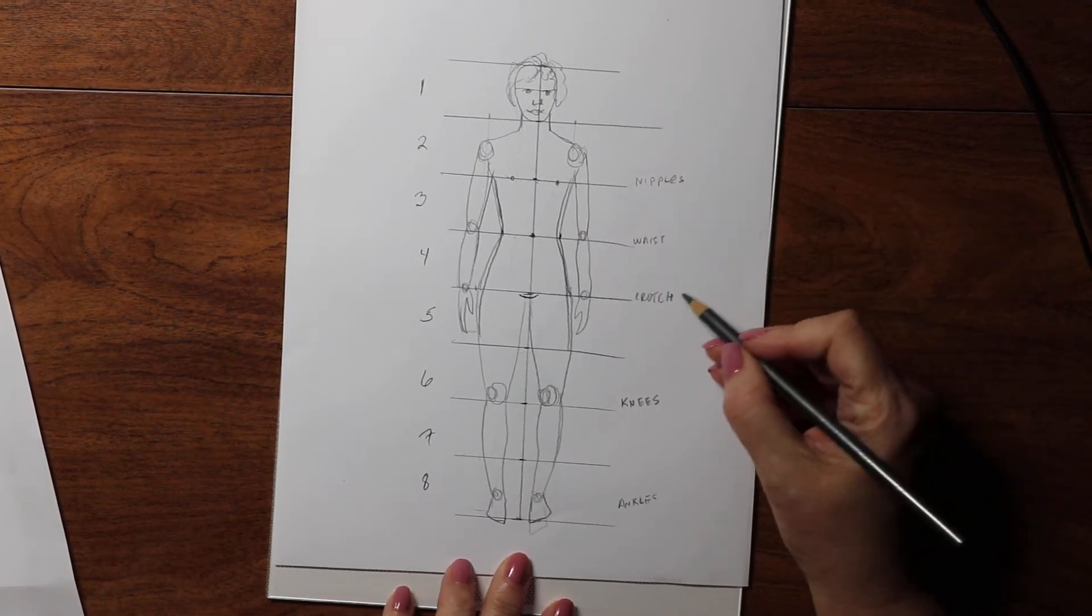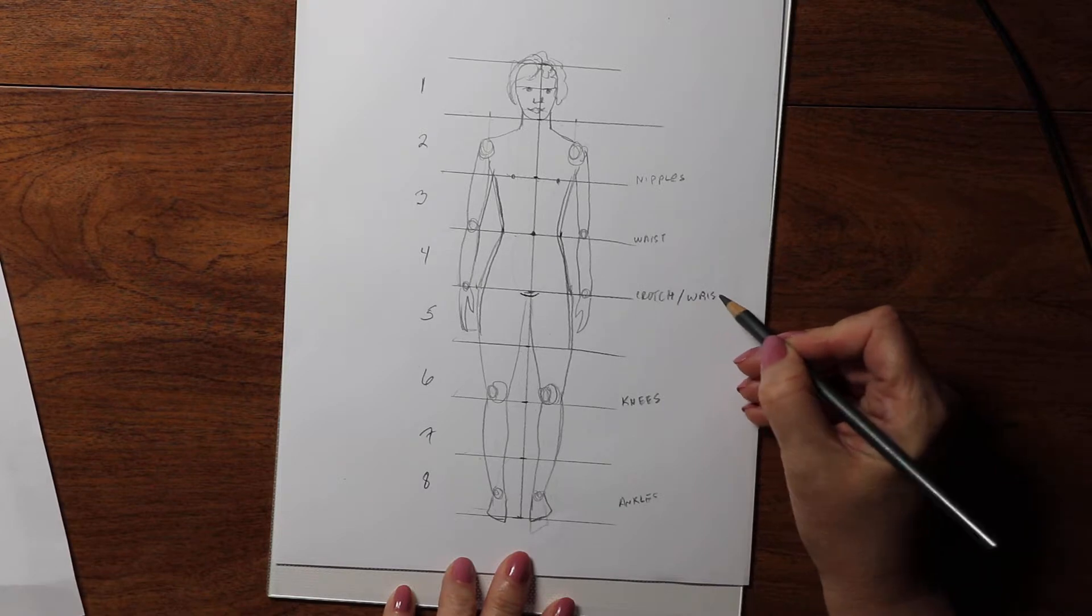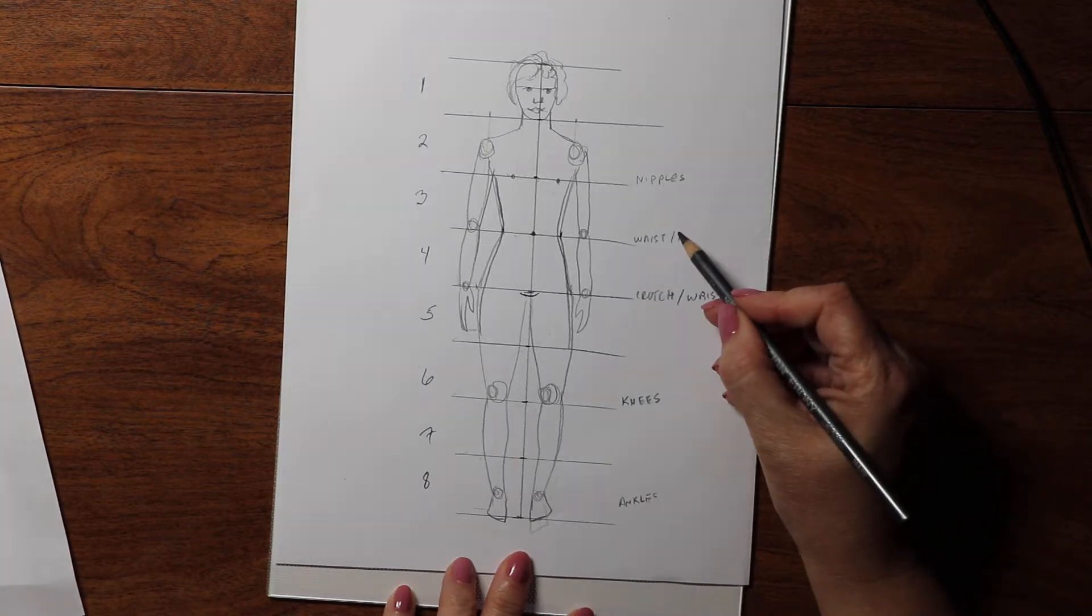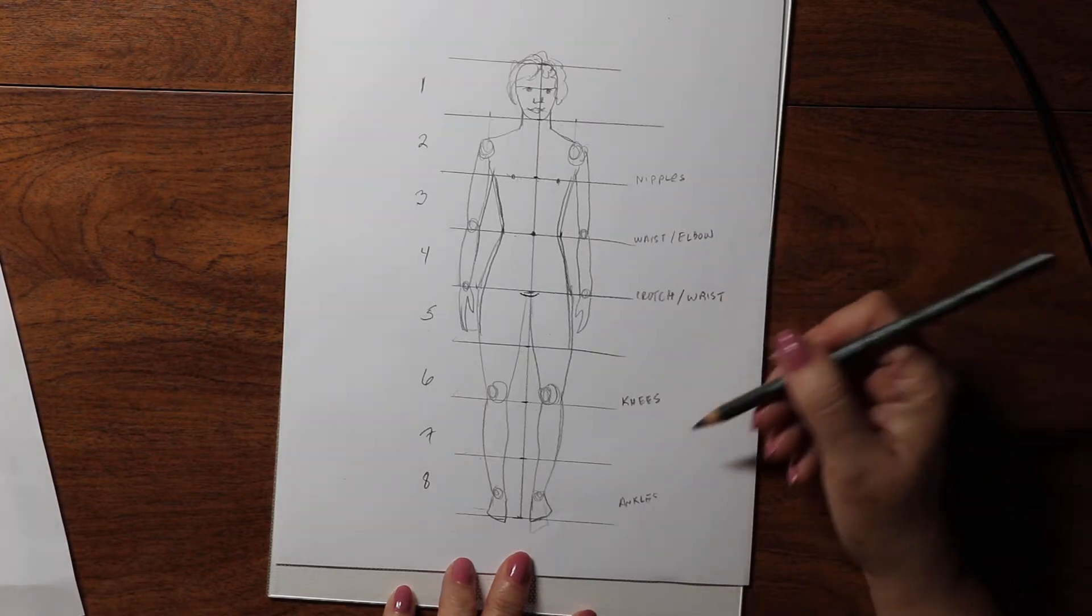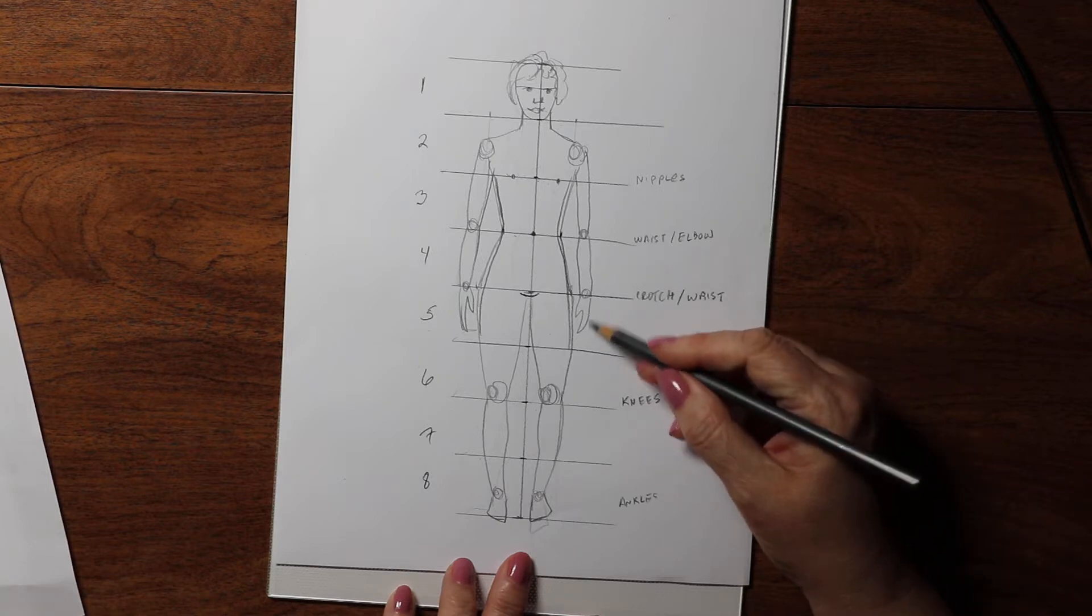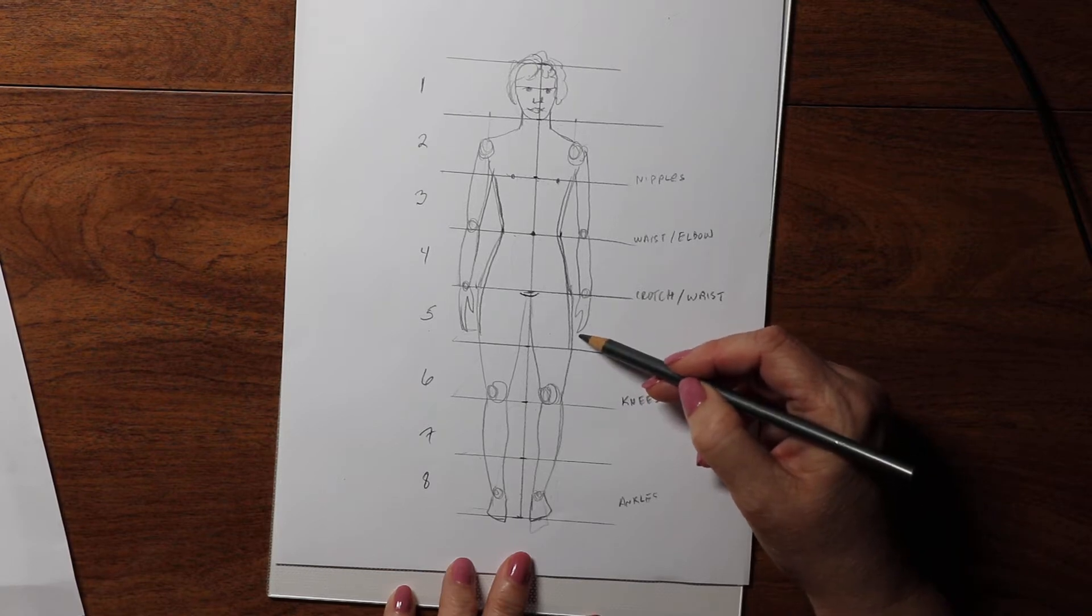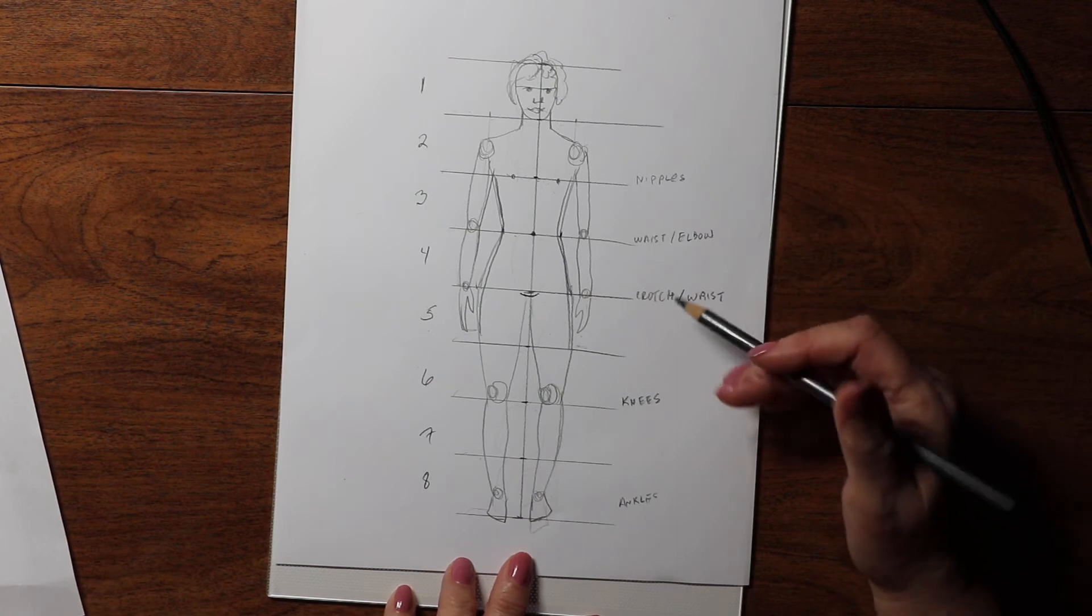This is also the wrist line, which is the bottom of the fourth. This is also the elbow point. And let's see, the hand is more or less in this four to five head. If you've got longer hands or arms, they may be down to the five, but that type of thing.